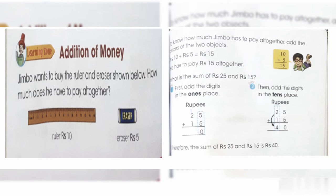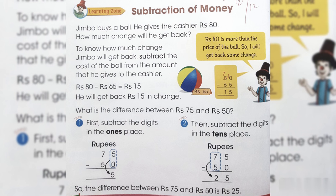What is the sum of 25 and 15? When we add 25 and 15, it will be 40 rupees. So when we want to buy two things, we need to add the money together and give the total amount.